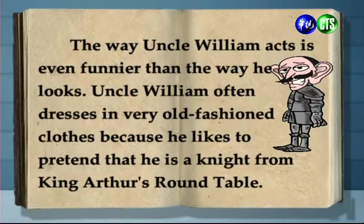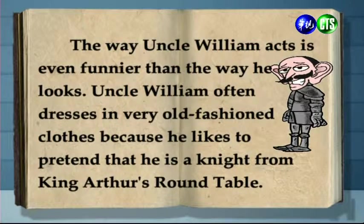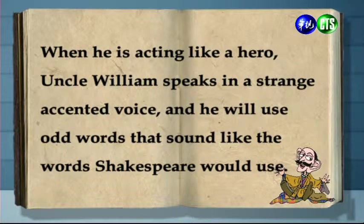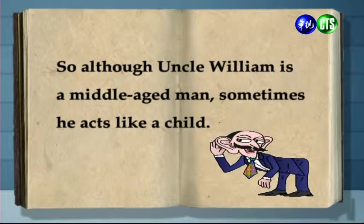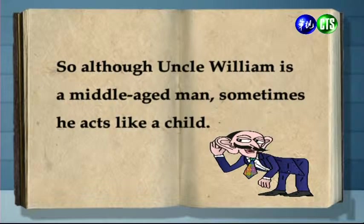Let's take a look at all the supporting details in this paragraph. The way Uncle William acts is even funnier than the way he looks. Uncle William often dresses in very old-fashioned clothes because he likes to pretend that he is a knight from King Arthur's Roundtable. 好，威廉叔叔的行為則比他的長相更有趣了。他常常喜歡穿著舊式的衣服，因為他喜歡假裝自己是亞瑟王的圓桌武士之一。當他假扮英雄的時候，他總是操著一口奇怪的腔調，然後使用一些只有在莎士比亞時代才會使用的字彙。So although Uncle William is a middle-aged man, sometimes he acts like a child. 所以儘管威廉叔叔已經是個中年人了，有時候他的行為舉止還是像個孩子。